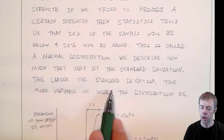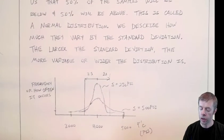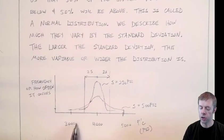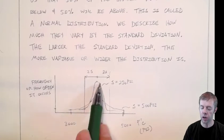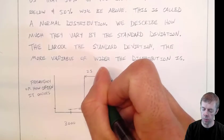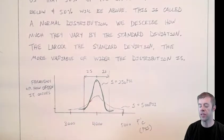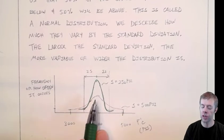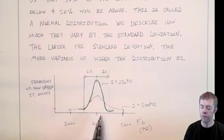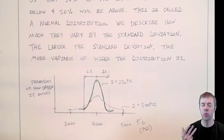Basically the larger the standard deviation the more variable or wider the distribution is. I've got a plot here showing strength on the x-axis and frequency or how often something occurs on the y-axis. This higher group of data has a lower S or lower standard deviation than this one. Notice it doesn't go up as high.